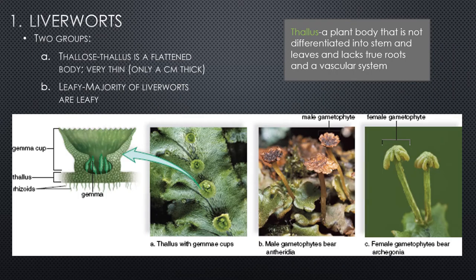Liverworts come in two varieties: thallose and leafy. The thallus is the plant body not differentiated into stems and leaves, lacking true roots and a vascular system — it is the major body of the liverwort. The thallose type has a flattened, very thin thallus. The leafy type is where the majority of liverworts live, and that portion of the plant looks very much like a leaf.